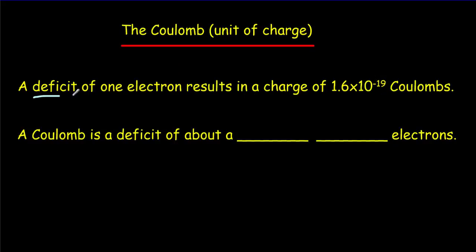If we have a deficit of exactly one electron, that is, we have one more proton than an electron, then we get a charge of only 1.6 times 10 to the minus 19 Coulombs.